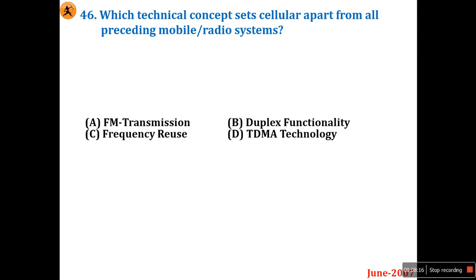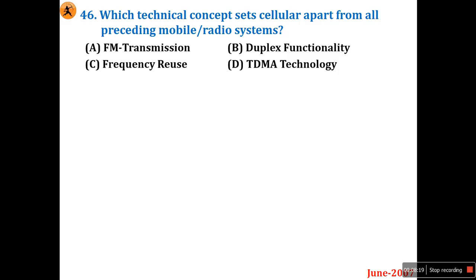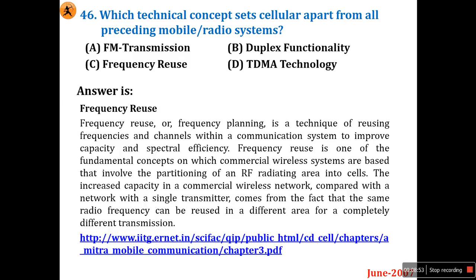Question number 46: Which technical concept sets cellular apart from all preceding mobile or radio systems? Options are frequency modulation transmission, duplex functionality, frequency reuse, and time division multiple access. The answer is frequency reuse, because every cell uses different frequencies. Option C is the right answer.